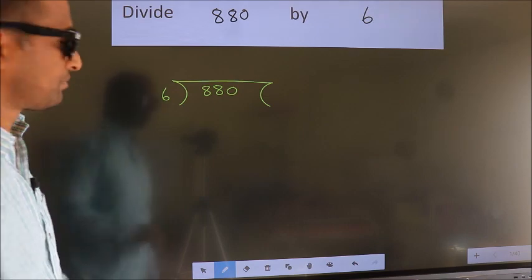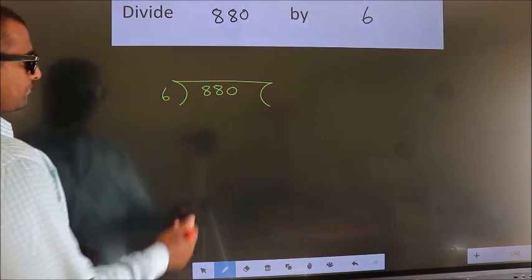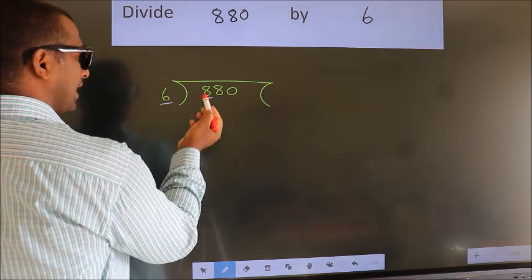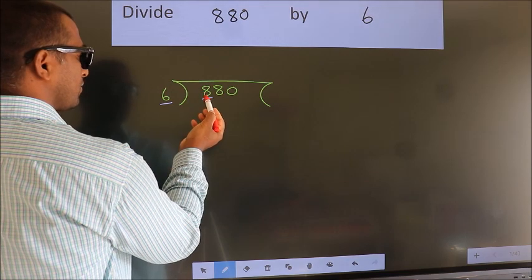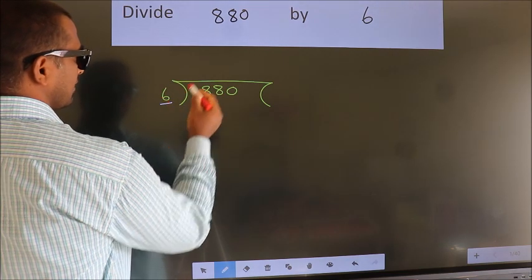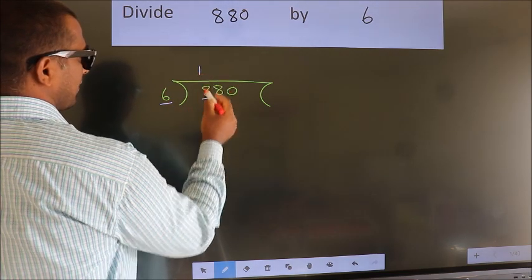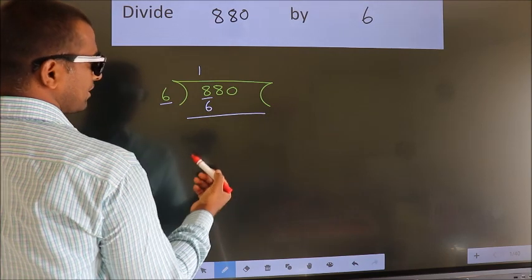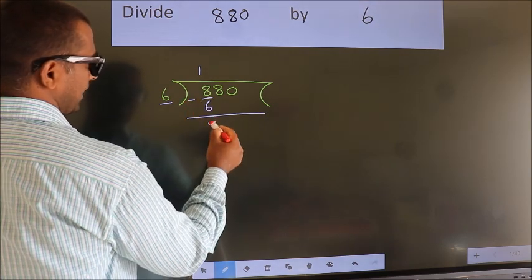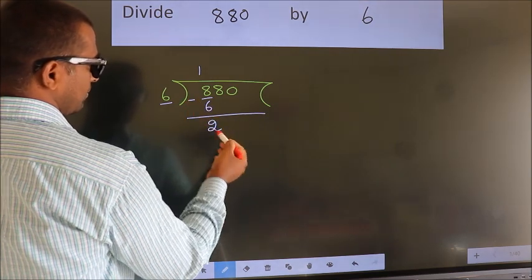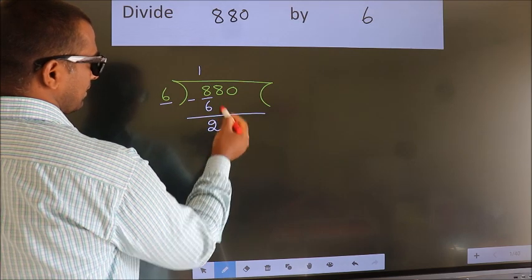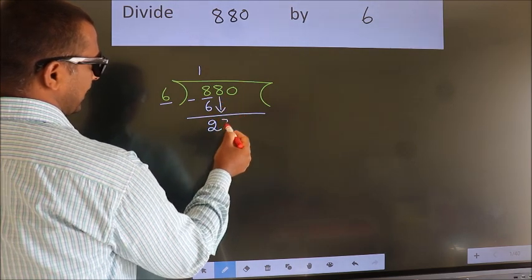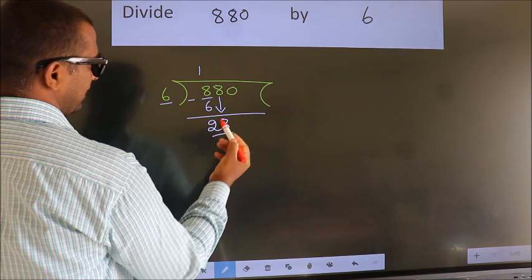Next. Here we have 8, here 6. A number close to 8 in the 6 times table is 6 × 1 = 6. Now we should subtract. We get 2. After this, bring down the beside number. So, 8 down. So, 28.